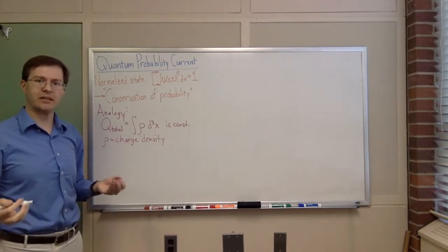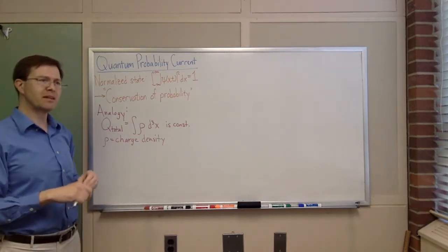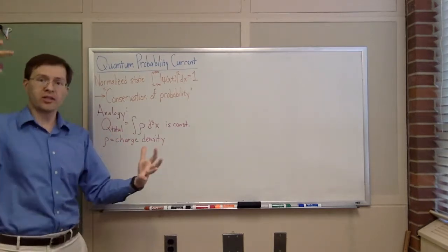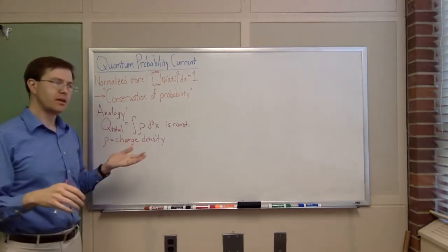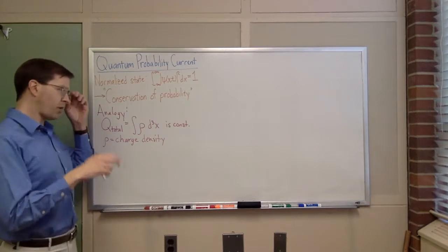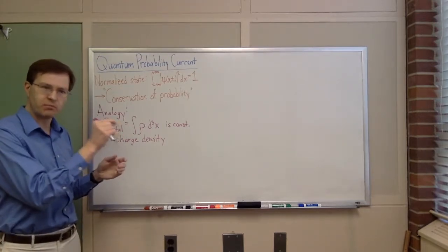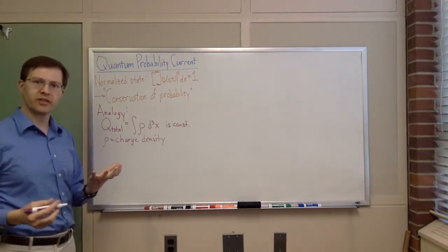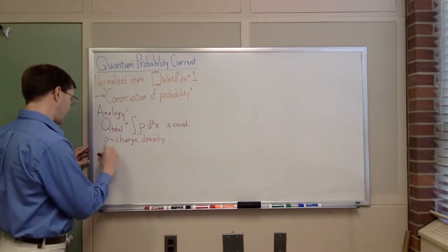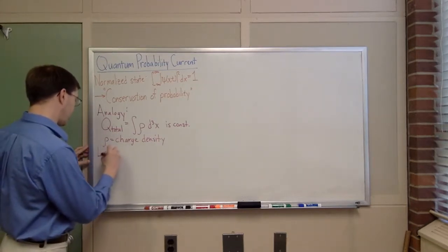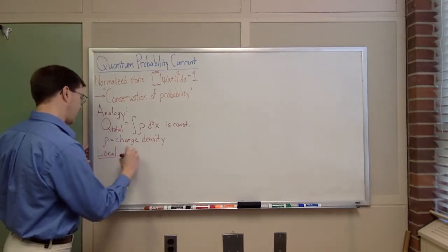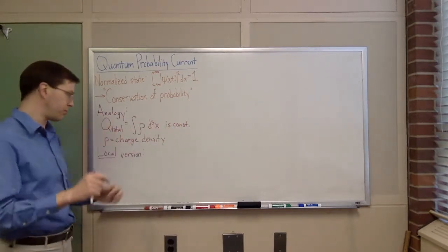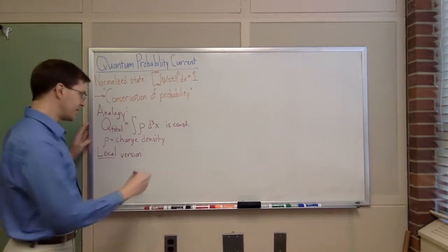So far this isn't all that exciting, but what I want to do is say: this Q total is a global statement, where by global I mean you have to add up over all space — the whole universe — to make sense of this statement. Sometimes we want to talk about conservation of charge point by point. There's the local version — local meaning it doesn't have to connect distant points, you look just at one place.